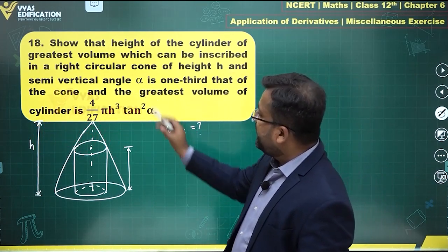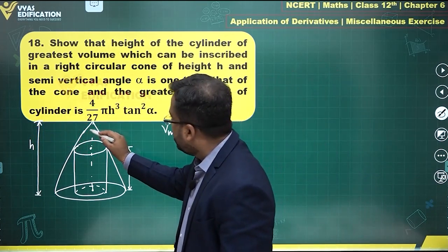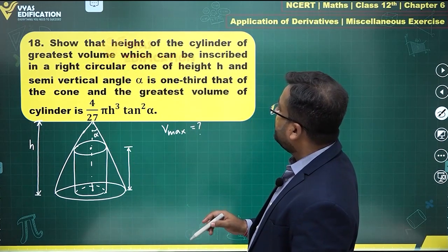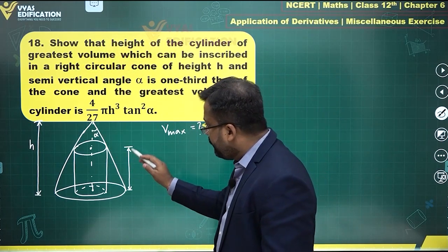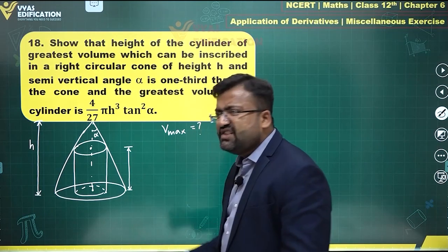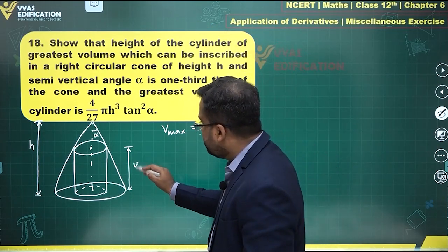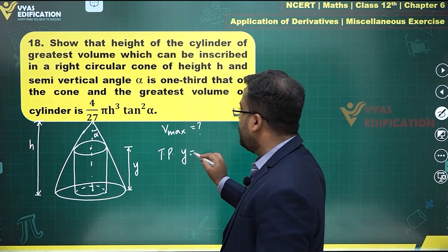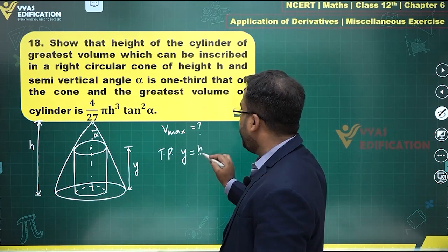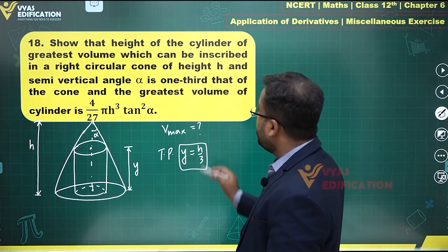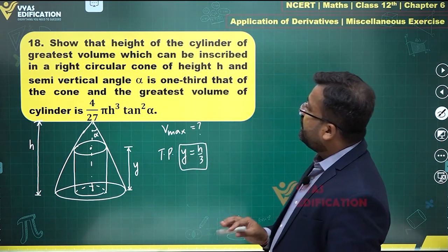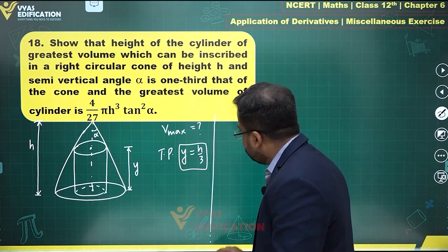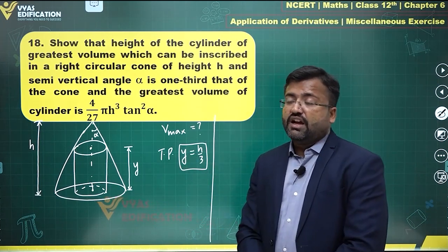The semi-vertical angle is given to be alpha, and we have to prove that the height of the cylinder is one-third that of the cone. Let's say this height is y, and we need to prove y = h/3. We are also supposed to find the greatest volume of the cylinder.